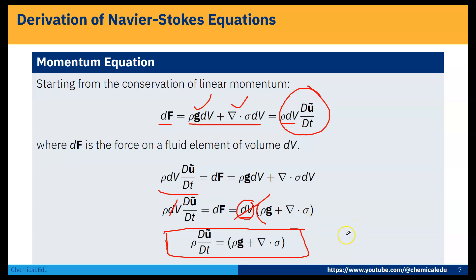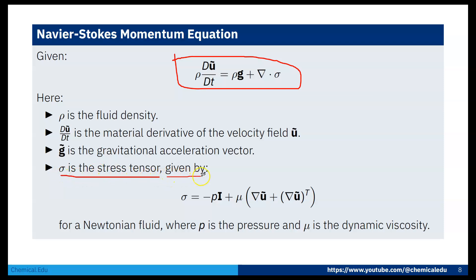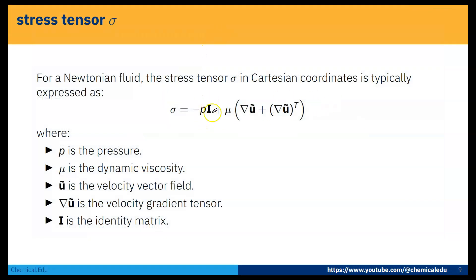Now I will discuss more about σ. The stress tensor σ for a Newtonian fluid is given by σ = −pI + μ(∇u + ∇u^T), where p is pressure, μ is the dynamic viscosity, I is the identity matrix, and ∇u is the velocity gradient tensor.